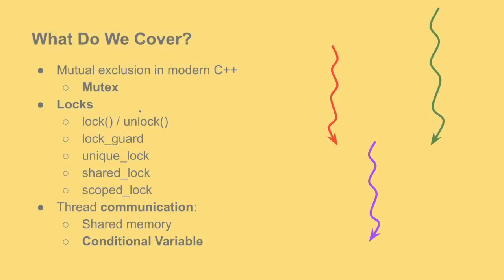What do we cover today? First we will talk about C++ mutexes and how we can use them to create mutual exclusion. Then we will talk about locks on mutexes, different versions of locks. And finally we will talk about communication between threads, namely using shared memory or conditional variables.